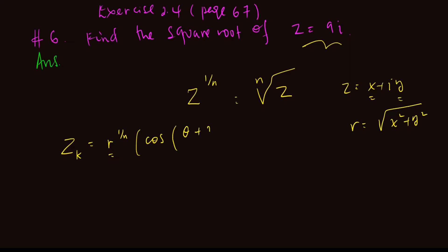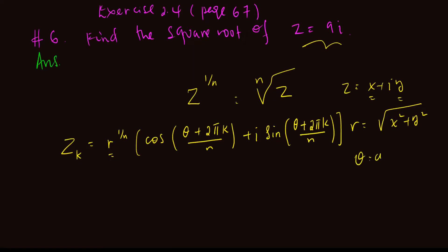The formula continues: theta plus 2 pi times k divided by n, plus i times the sine of the same angle — the principal argument plus 2 pi k divided by n. This is the formula we will use, where theta is the principal argument of z, defined by tan inverse of y over x.